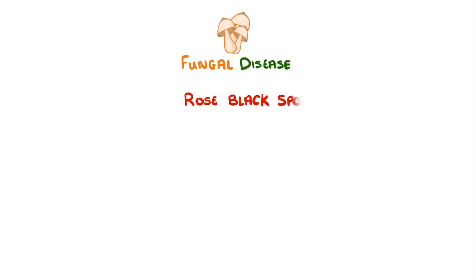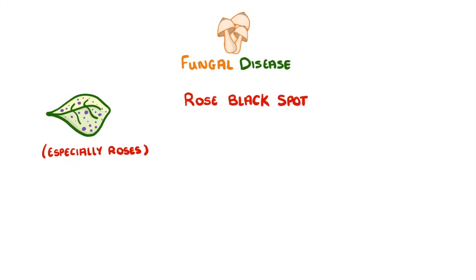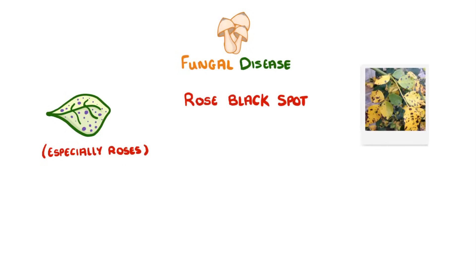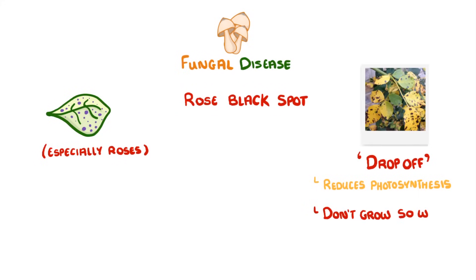An example of a fungal disease is rose black spot, which causes purple or black spots to form on the leaves of plants, especially roses, hence the name. As the fungus does more and more damage, the leaves can start to turn yellow and drop off. This reduces the plant's ability to photosynthesize and so they don't grow so well.